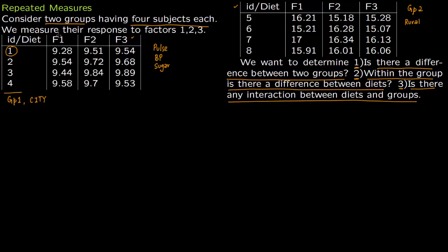Third, is there any interaction between diets and groups? For example, in a political survey, Republican and Democrat groups might differ, but there might be an interaction between the question and the group which can make them similar. If there is interaction between the diets and groups, that means you have to do more research.